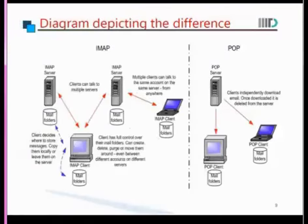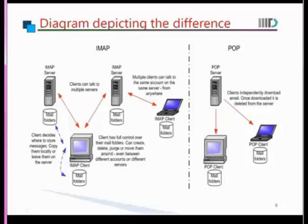A diagram depicting the difference: in IMAP, the client downloads the message content from the server side and can copy it locally or leave it on the server. Whereas in POP, the client downloads the message independently and then deletes it from the server side.